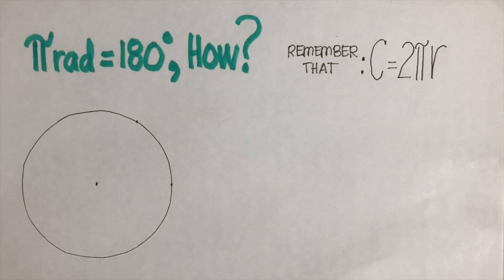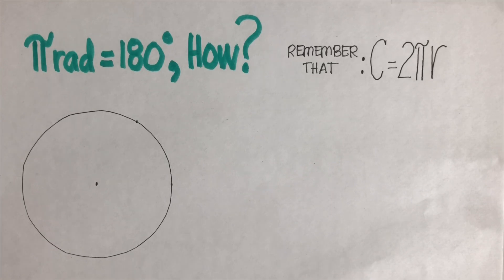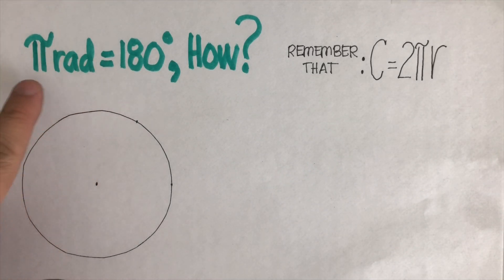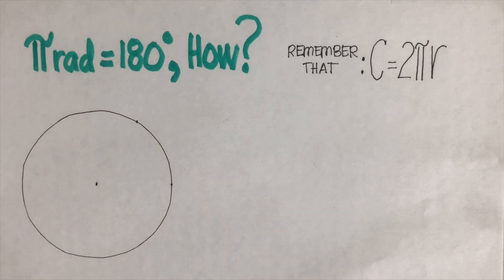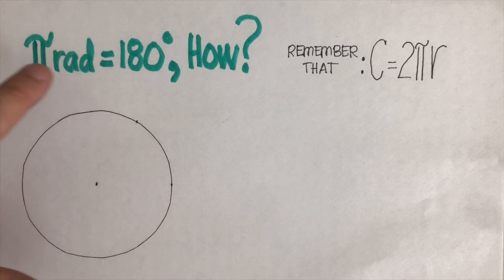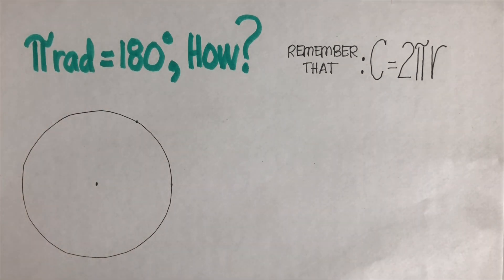Hello everyone, welcome back. Today we're going to explain why one radian equals 180 degrees. We've used this conversion factor in previous videos and lessons, but how did they come to be equal to each other? So we're going to explain it today.